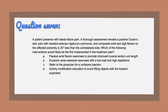Question seven: a patient presents with lateral elbow pain. A thorough assessment reveals a positive COSINS test, pain with resisted extensor digitorum communis, and composite wrist and digit flexion on the affected extremity is 20 degrees less than the contralateral side. Which of the following interventions would likely be the first implemented in the treatment plan? A, passive wrist flexion stretches to promote improved muscle tendon unit length. B, eccentric wrist extension exercises with a low load and high repetitions. C, refer to the physician for a cortisone injection. D, activity modification education to avoid lifting objects with the forearm supinated.